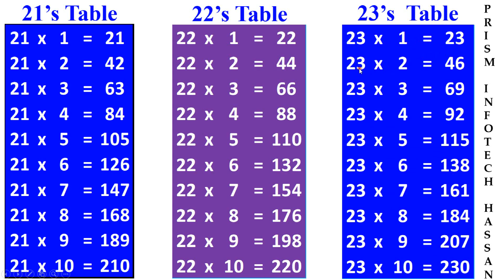23's table. 23, 1 times 23. 23, 2 times 46. 23, 3 times 69. 23, 4 times 92. 23, 5 times 115.